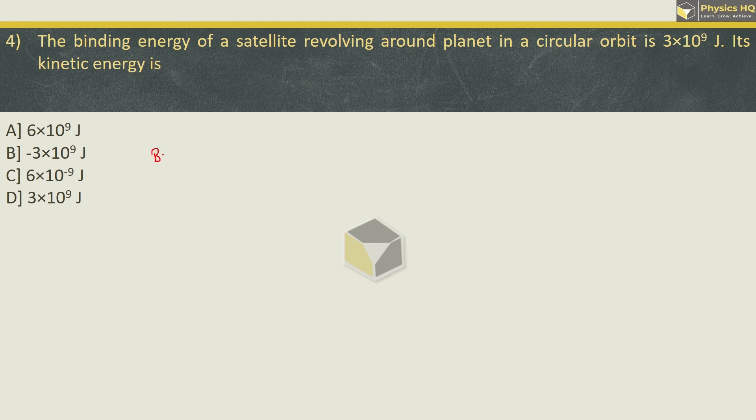So binding energy is basically given by the formula 1 by 2 GMM by R. And kinetic energy ka bhi formula same hai, 1 by 2 GMM by R. So whatever is the binding energy, same as the kinetic energy over here. So the correct option is option D. Hope you all understood this.